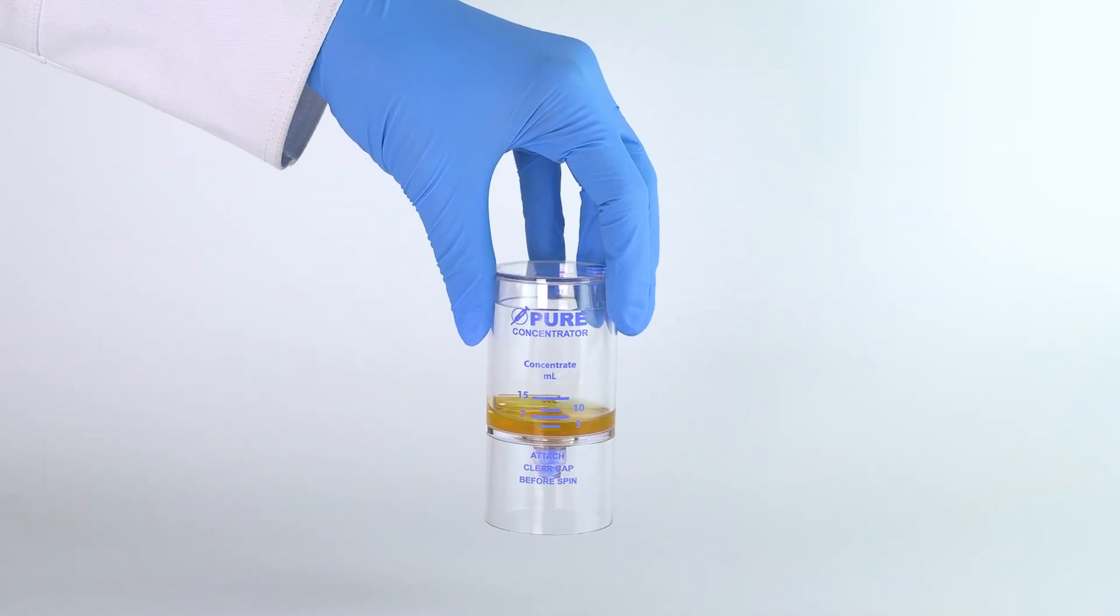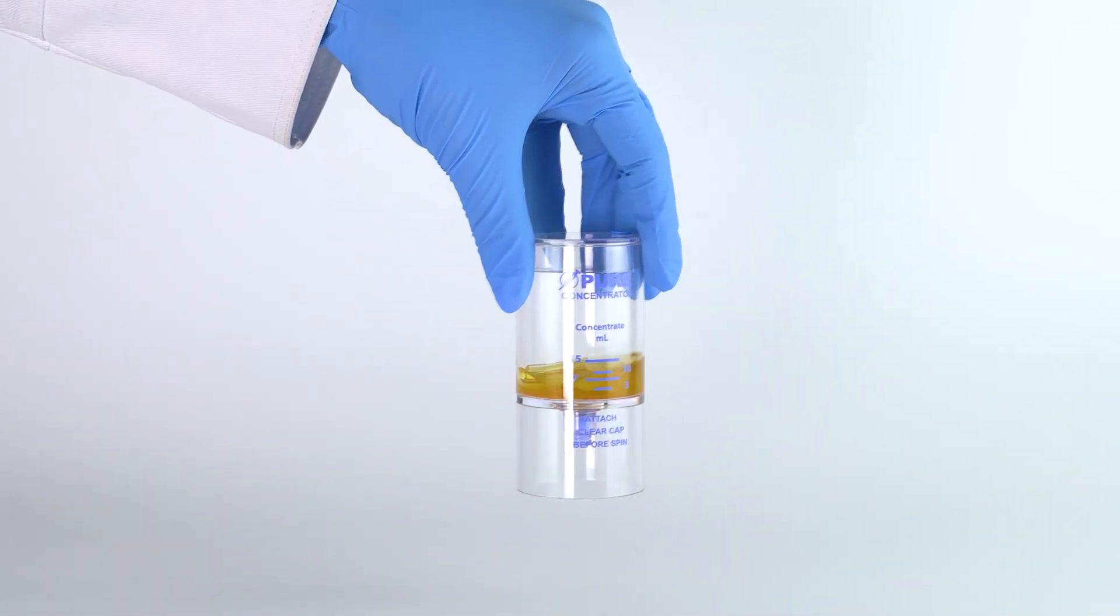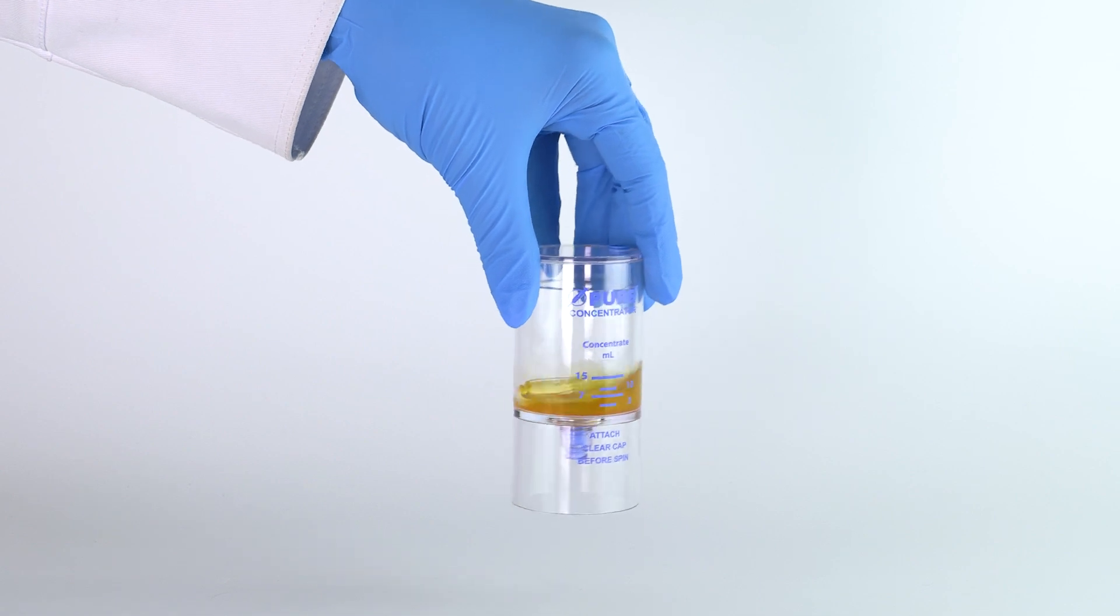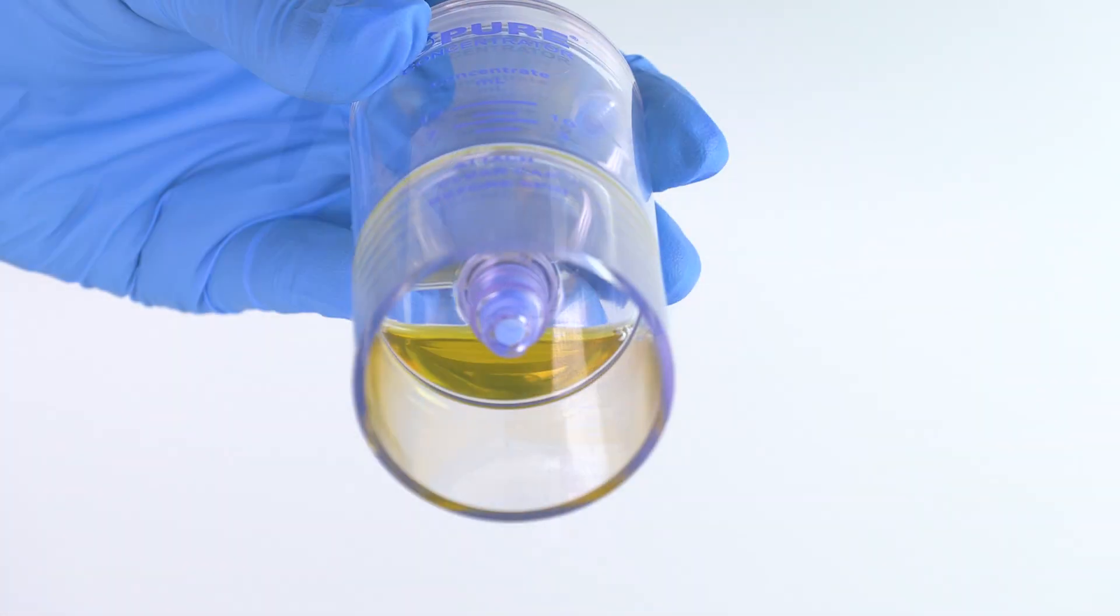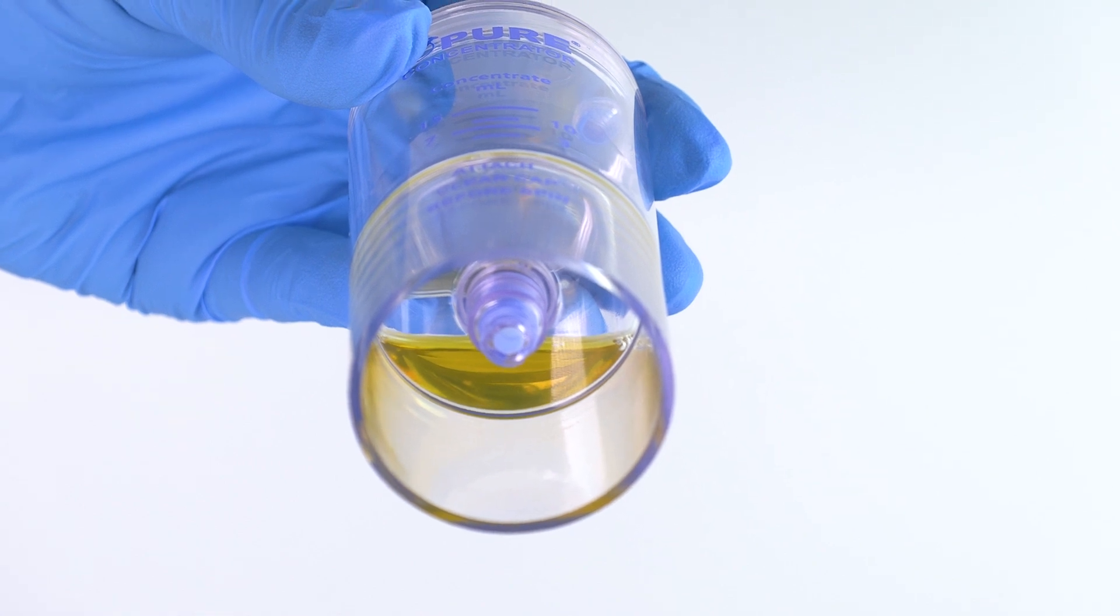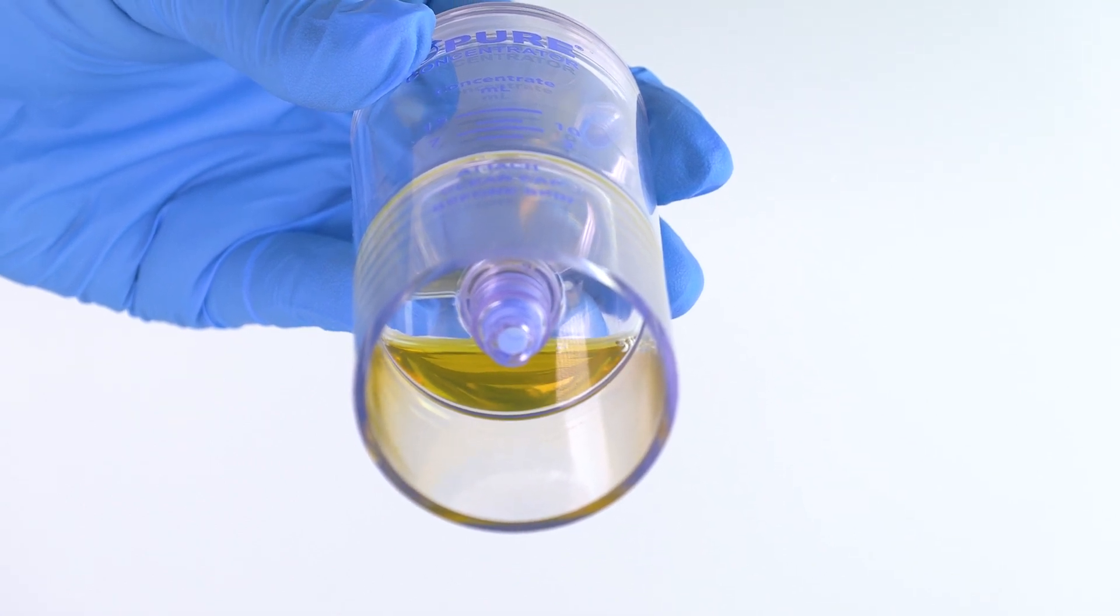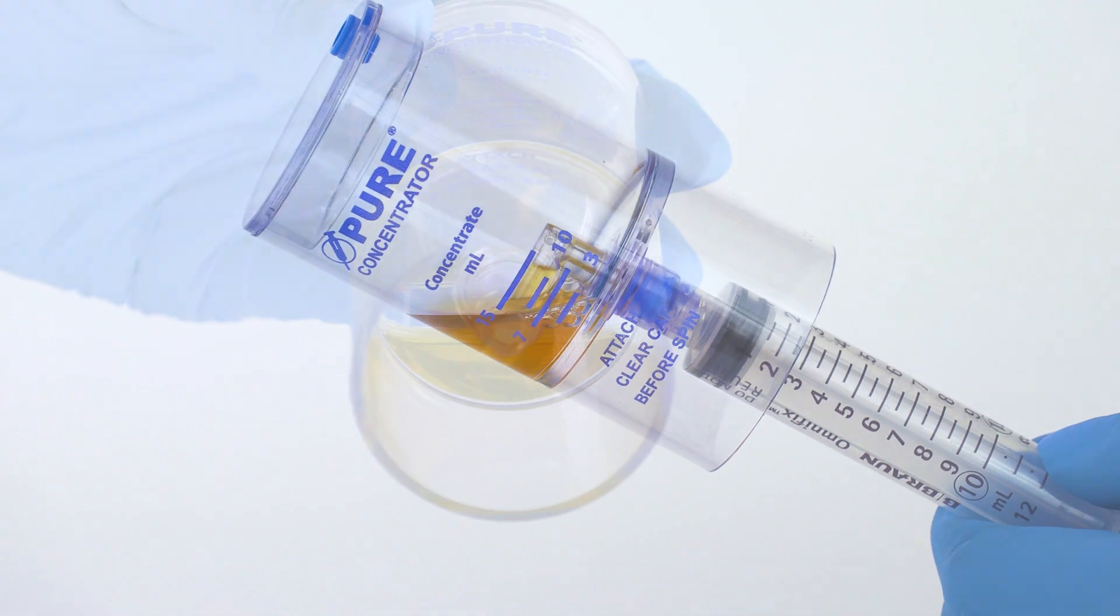Re-suspend the platelet buffy coat back into the plasma by rocking and swirling the device back and forth. Do this until all of the platelets have been re-suspended into the plasma solution and is no longer visible at the bottom of the device.